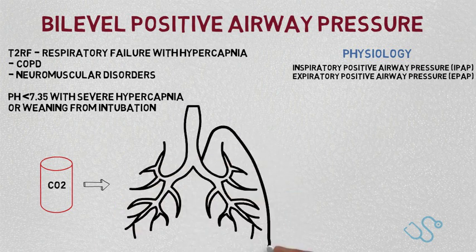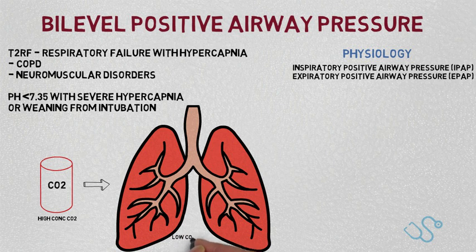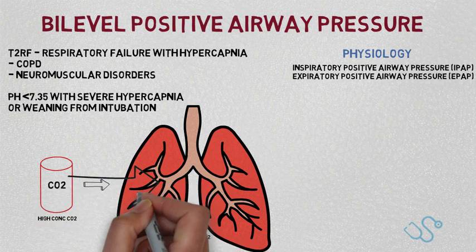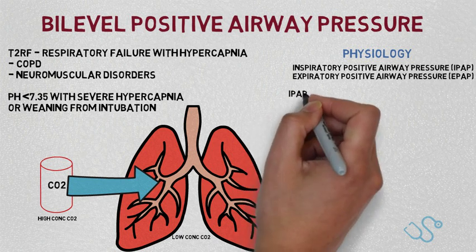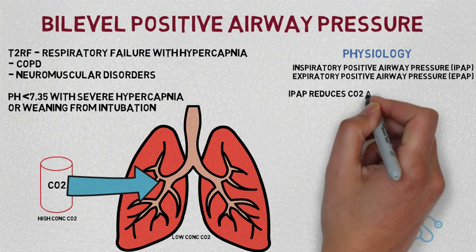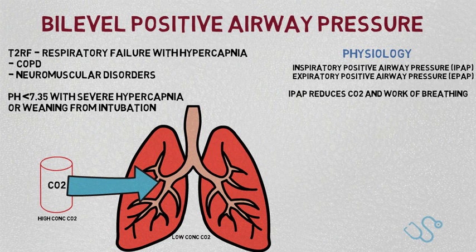Thinking of this simply, imagine the lungs as a balloon. You put more pressure in — that's the IPAP — and the balloon expands. By simple laws of diffusion, a substance will move from an area of high concentration, such as the blood, to an area of low concentration, such as the lungs, down the concentration gradient. By expanding the balloon, you're making the area of low concentration even lower, and therefore the rate of diffusion is faster. This ultimately removes CO2 from the blood so you can exhale it. IPAP also helps by reducing resistance and workload on already tired respiratory muscles, therefore helping the patient ventilate more effectively.